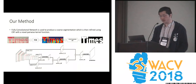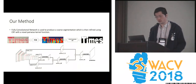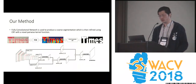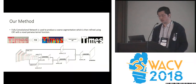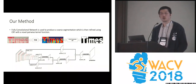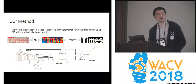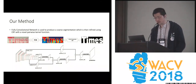Our method is quite straightforward. First, we use a fully convolutional network to produce a coarse-level heat map. Then we use a fully connected conditional random field with a novel pairwise kernel function to refine the result.